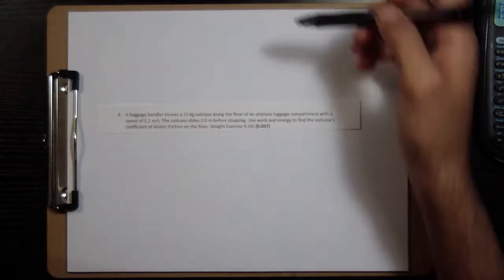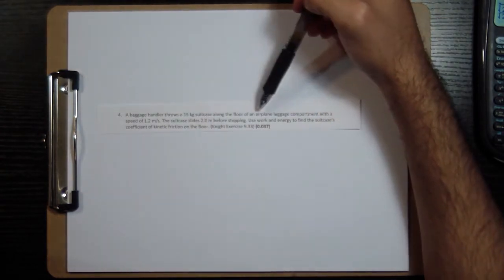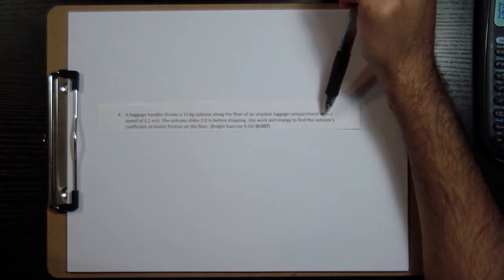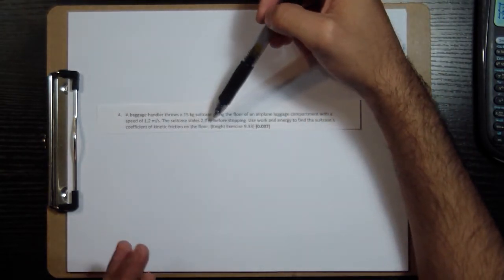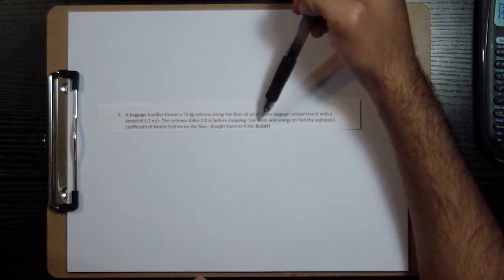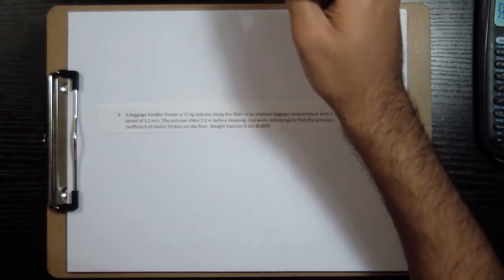Okay, let's look at problem number four. I'll read this to you. A baggage handler throws a 15 kilogram suitcase along the floor of an airplane luggage compartment with a speed of 1.2 meters per second. The suitcase slides two meters before stopping. Use work and energy to find the suitcase coefficient of kinetic friction on the floor.